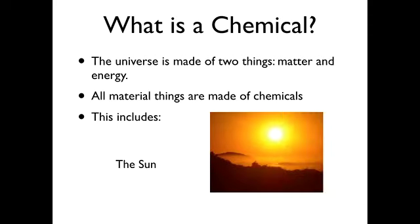The sun, chemically speaking, is very simple. It is primarily composed of two elements: hydrogen and helium. The sun is undergoing nuclear reactions all the time — nuclear fusion — converting hydrogen into helium and releasing a lot of energy as it goes. So the sun actually incorporates both matter and energy. But the sun is primarily a chemical phenomenon.